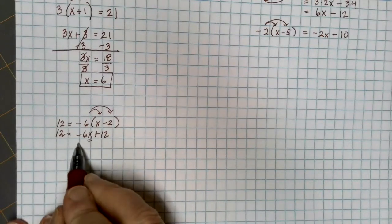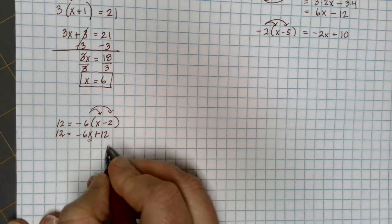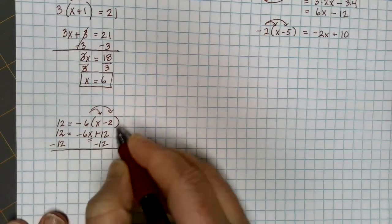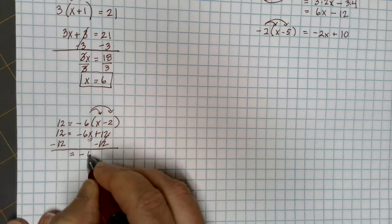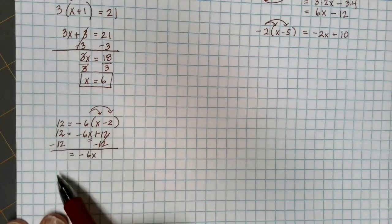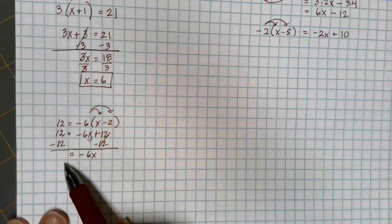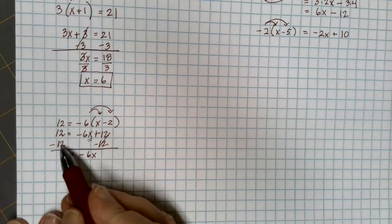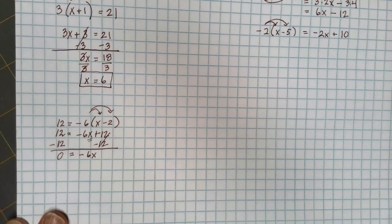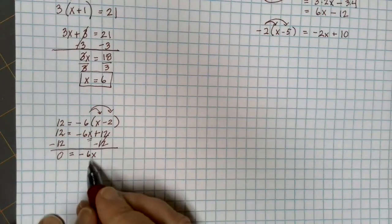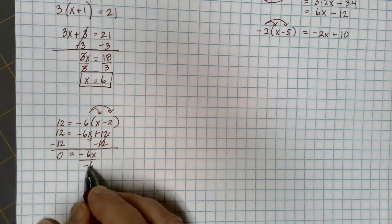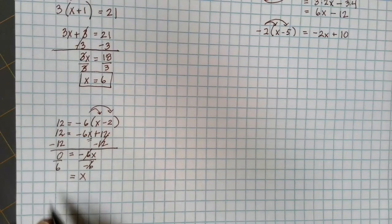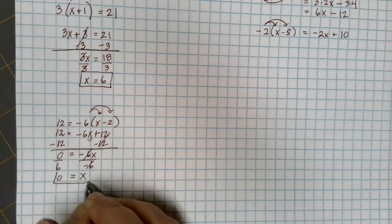I want to get x by itself. It's being multiplied by negative 6, with 12 added. The 12 is farthest away, so we get rid of that first — it's being added, so I subtract 12 from each side. The 12 minus 12 on this side goes away, leaving just negative 6x. On the other side, 12 minus 12 equals 0, so I use 0 there. I still need to finish getting x by itself, so I divide by negative 6 on each side. Dividing by negative 6 and multiplying by negative 6 undo each other, leaving me with x. 0 divided by 6 gives me 0, and 0 is a perfectly valid solution.